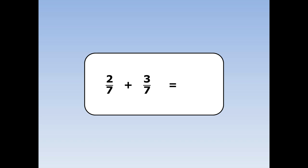2 sevenths plus 3 sevenths. We add the numbers on the top together, and the bottom number stays the same. 2 plus 3 is 5, the 7 stays the same.